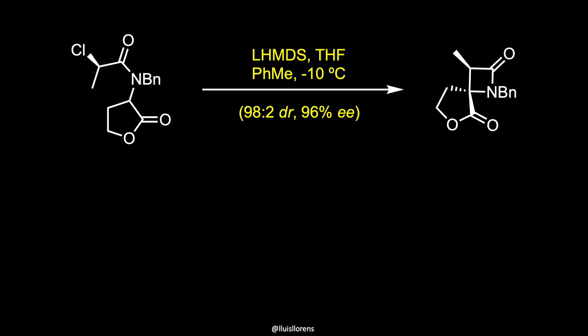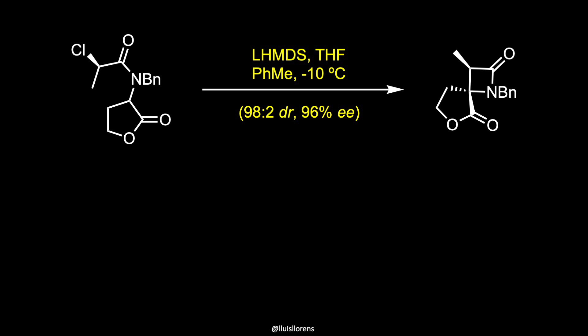The next step involves the formation of the crucial spirocyclic ring system. The lactone is treated with LHMDS to form an enolate that undergoes SN2 displacement of the chloride, forming the spirolactone and establishing both stereocenters with a 98:2 diastereomeric ratio and 96% enantiomeric excess. These reaction conditions were selected as optimal for commercial production because LHMDS gave the best yield of 95% with the best diastereo- and enantioselectivity. The reaction takes place in an easy-to-manage homogeneous solution and is unaffected by agitation strength.